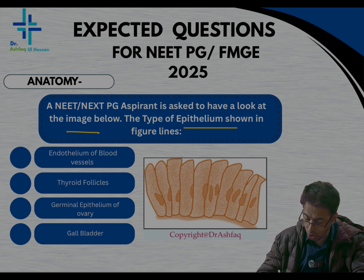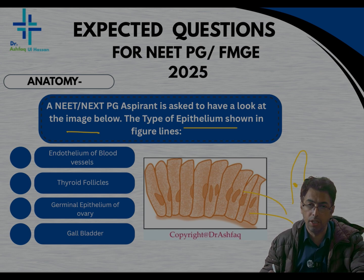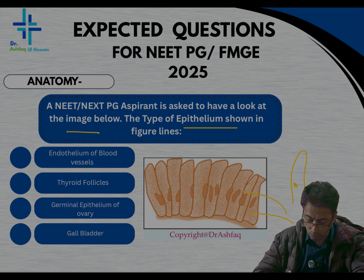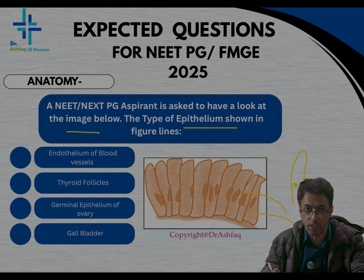This is an epithelium in which you can see tall columnar cells with a central nucleus. So this is one cell, this is another cell, and you can see it is a tall columnar epithelium. The options given are endothelium of blood vessels, thyroid follicle, germinal epithelium of ovary, and the gallbladder. This is a very fundamental question in histology but very frequently asked.